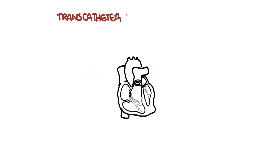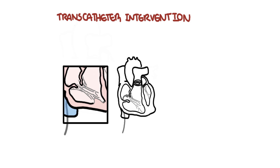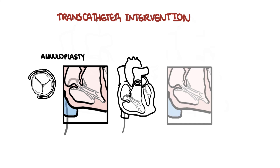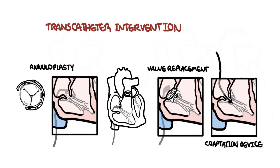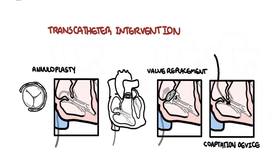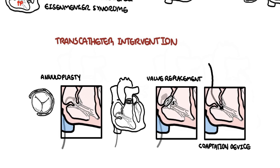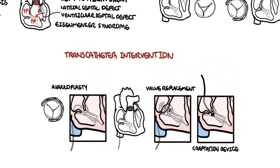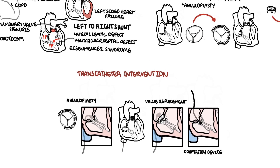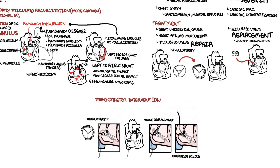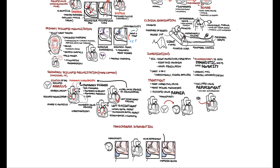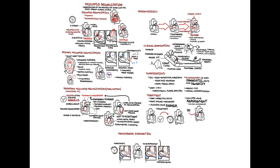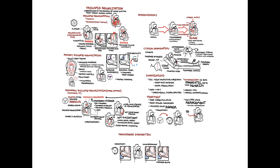Aside from open heart surgery, transcatheter options are now available, which can also perform annuloplasty, tricuspid valve replacement, and coaptation devices for the tricuspid valve. In summary, tricuspid regurgitation is characterized by backflow of blood into the right atrium during systole. It is categorized as primary — a problem in the tricuspid leaflet — or secondary, involving the tricuspid annulus with right ventricular and right atrial dilatation. Management involves treating the underlying cause, treating heart failure, and surgical or transcatheter options for valvular repair and replacement.